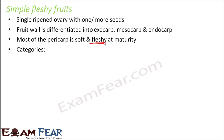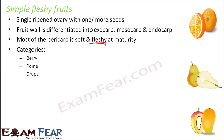Examples of simple fleshy fruits include berry, pome, and drupe. Berry includes fruits like cherries, berries, orange, and citrus. Pome includes fruits like pear. Drupe includes fruits like mango. Mango, pear, and orange are all examples of simple fleshy fruits because they have a single ovary with one or more seeds and a completely fleshy pericarp.